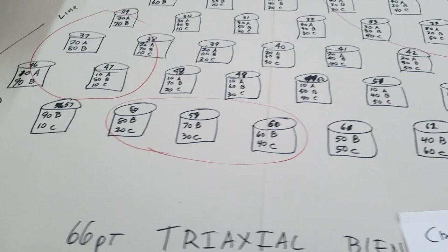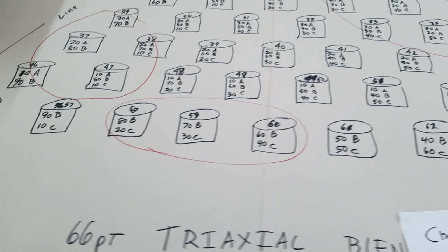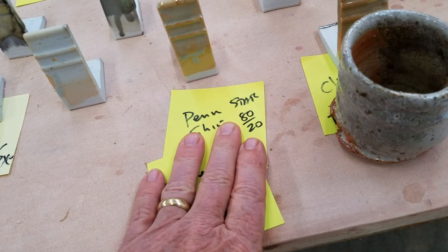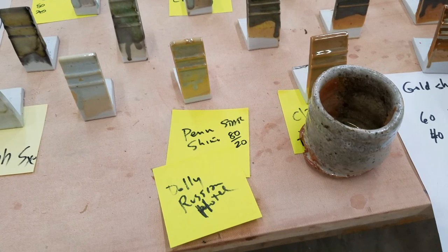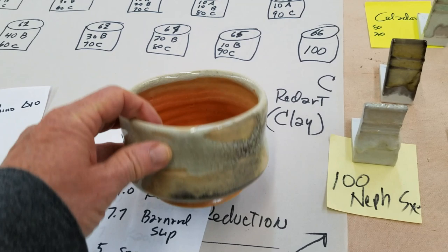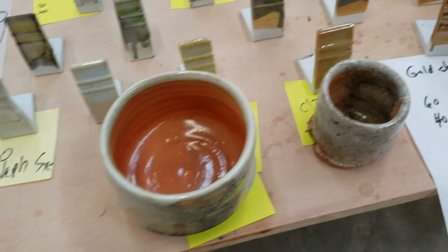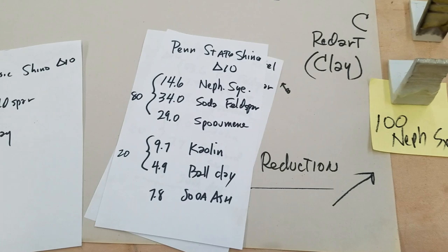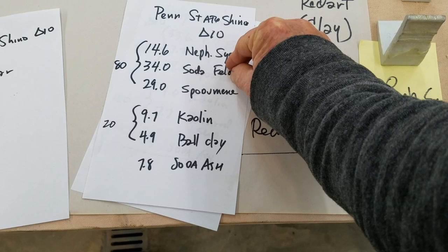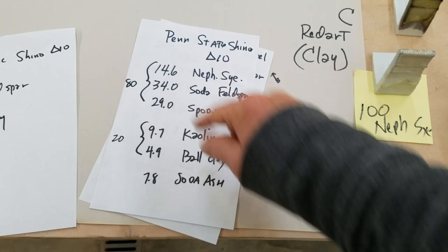This one's called 80/20 chino - it's 80 feldspar, 20 kaolin, ball clay, red art, barnard, or whatever. Here's an example of a carbon trap chino, which may also have soda ash. If you were investigating that area, look at this Penn State chino - you may think it's a complicated recipe, but it's really not when you put the feldspar together. Neph Sy is a feldspathoid or sodium feldspar, this is a soda feldspar, this is a lithium feldspar.